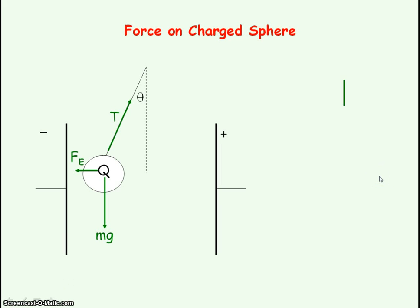We'll first take our weight which is acting vertically downwards, and then add our electric force which is acting to the left, and then we'll add the tension that's along the string.